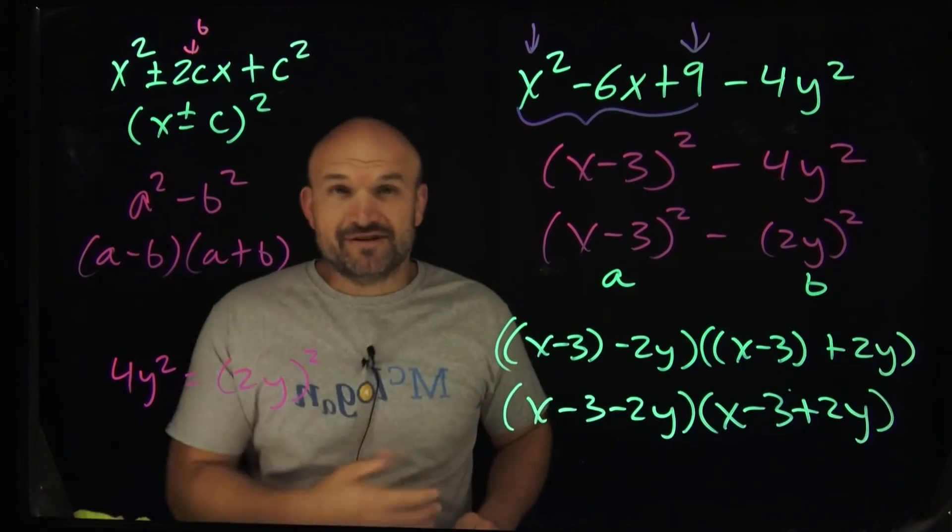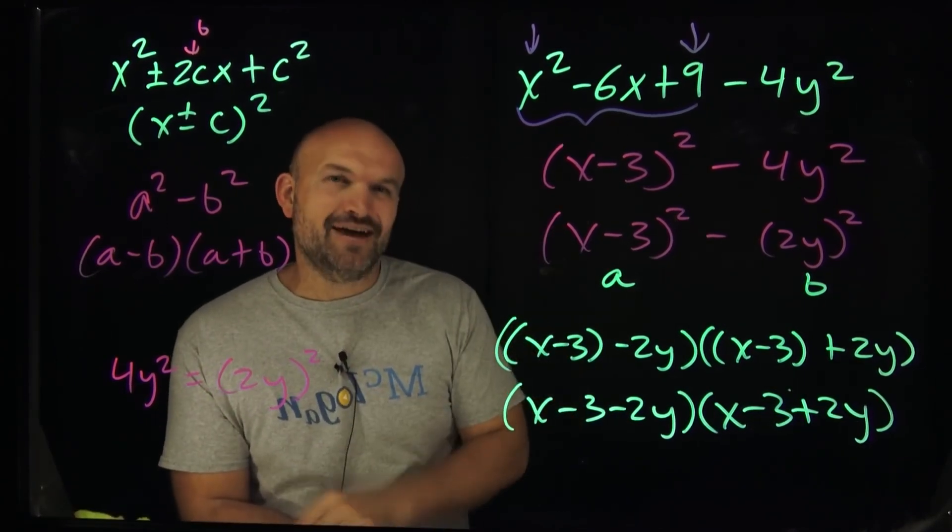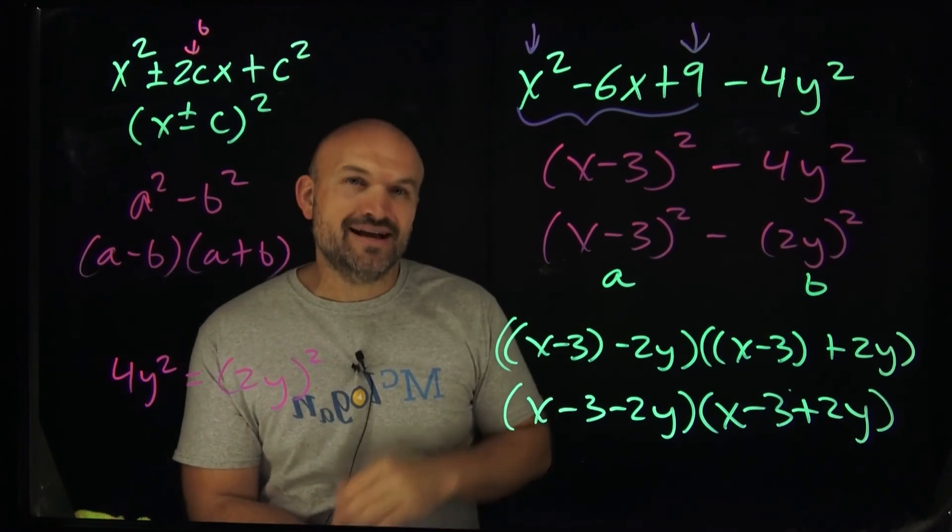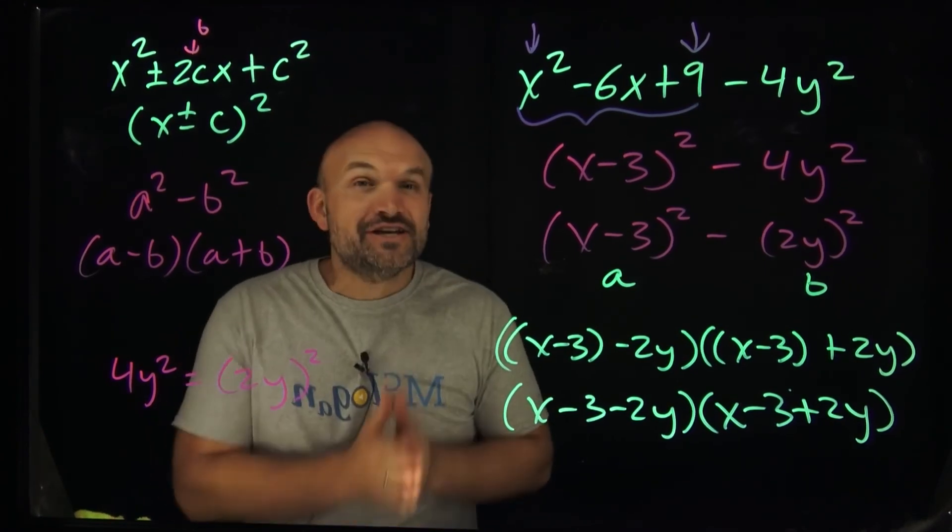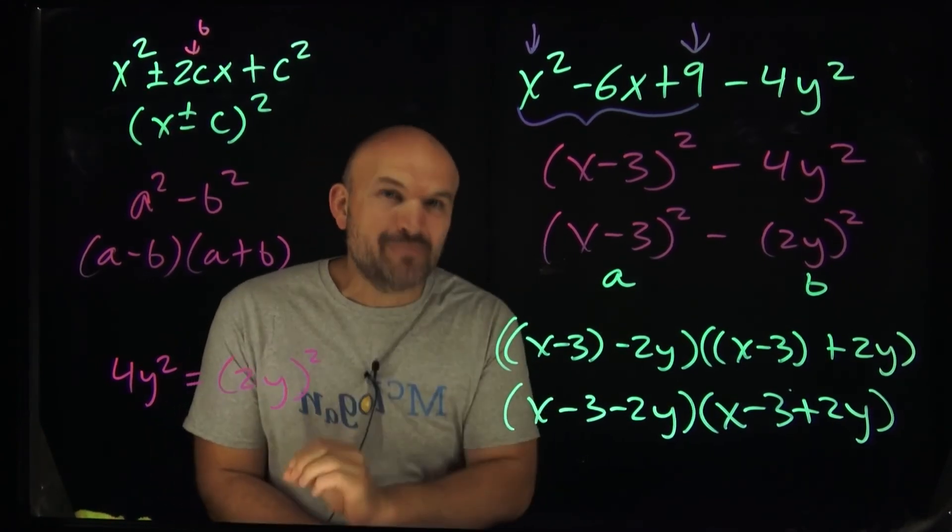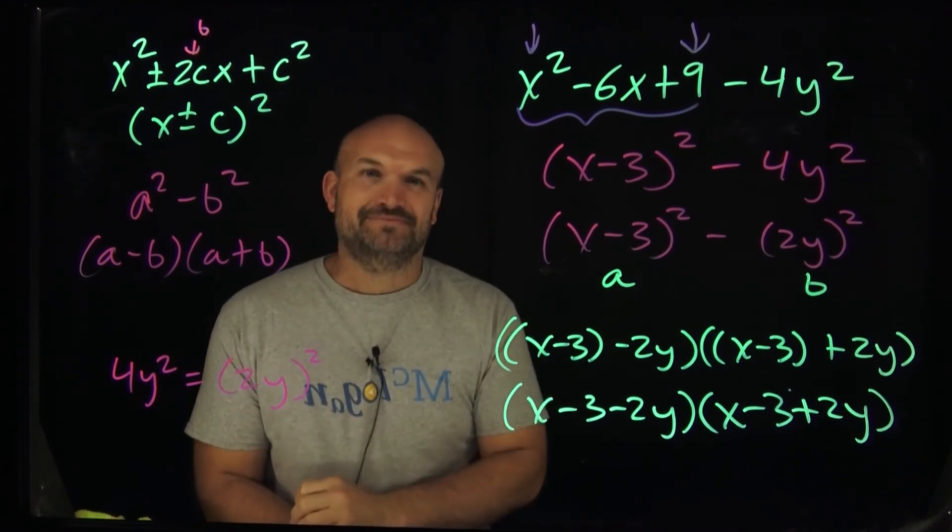So there was factoring by using the perfect square trinomial as well as difference of two squares. Now, if you're a little bit uneasy on the difference of two squares, then check out the next video I have for you where I actually do difference of two squares in the same problem three different times. I'll see you there.